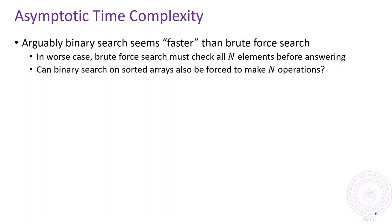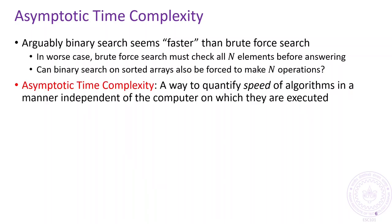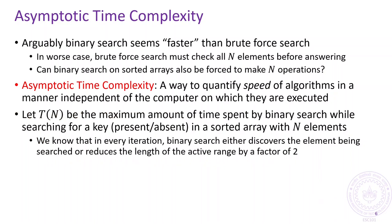In the examples we saw, binary search did seem faster than brute force search. But it would be nice to quantify this observation further. The concept of asymptotic time complexity is one way to do this — it gives us a way to get a good idea of how fast an algorithm is, irrespective of the machine on which it is being executed. Let T be a function that tells us the maximum amount of time binary search would spend when searching for a key in a sorted array with n elements.